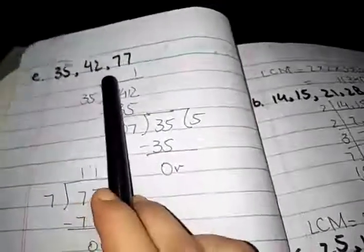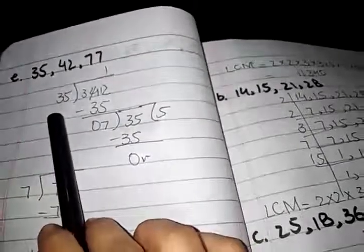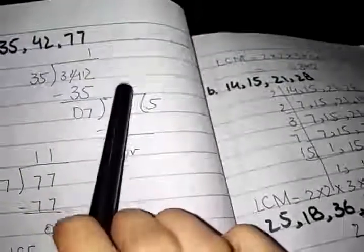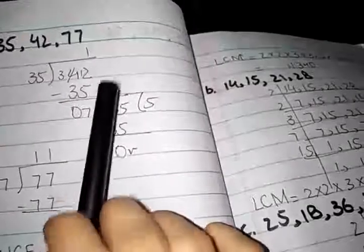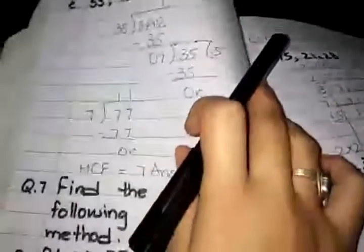The last part of this question is 35, 42, 77. First of all we divide 35 on 42. 35 ones are 35. 42 minus 35 is equal to 7. And the next dividend is 35. 7 fives are 35.